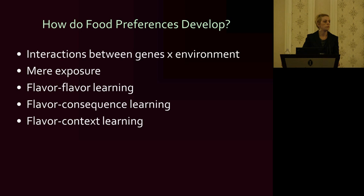We know that flavor-flavor learning, where you pair an unliked flavor such as broccoli — a common vegetable children don't like — with something liked, such as a dip or ketchup, will increase the preference for the unliked vegetable. Flavor-consequence learning is where you take in something that doesn't agree with you and get sick, and the next time you encounter that food you have an aversion to it. This also works in the other direction: if we take in something that has calories and have positive reinforcement, this can impact our food preferences the other way.